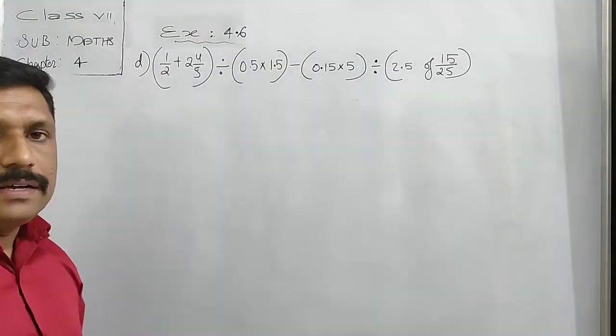0.5 plus 2.8: we add these. 2.8 plus 0.5 equals 3.3. Then for 0.5 into 1.5: multiply, we get 0.75. And for 0.15 into 5: multiply, we get 0.75. Then for 2.5 of 0.6: 2.5 times 0.6 gives us 1.50. So now every bracket has been solved. We have 3.3 divided by 0.75, and minus 0.75 divided by 1.50.